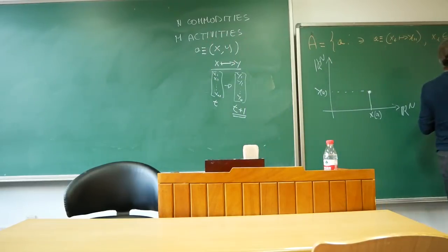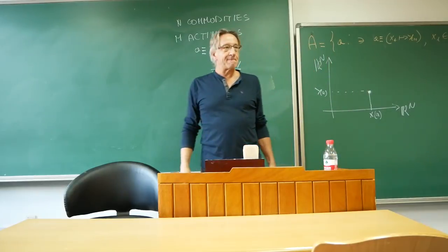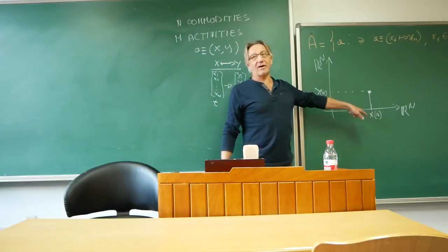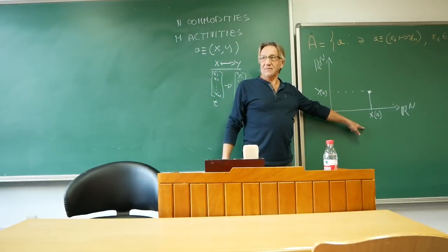Now, how do you write an input-output production function? You write output y equals min of a string, alpha1x1, alpha2x2, alphaNxN, right? It's our way of writing an input-output technology. So this is R1 and this is RF. Right?